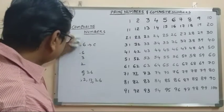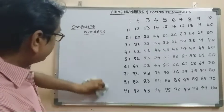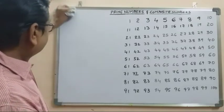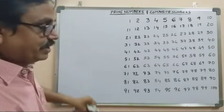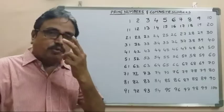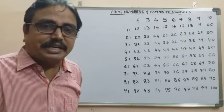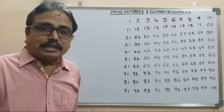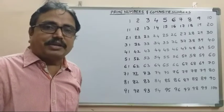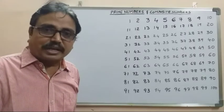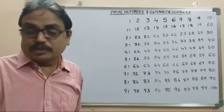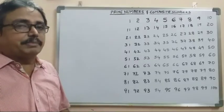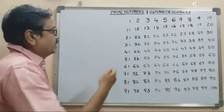So the definition: a number having exactly two factors, that is one and itself, is called the prime number. A number having more than two factors is called a composite number. And one is neither prime nor composite.